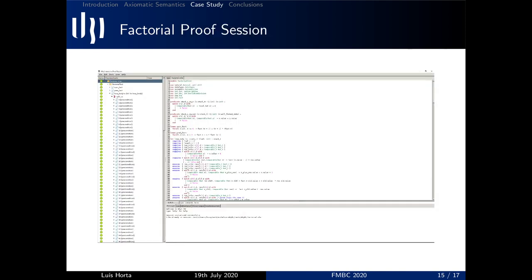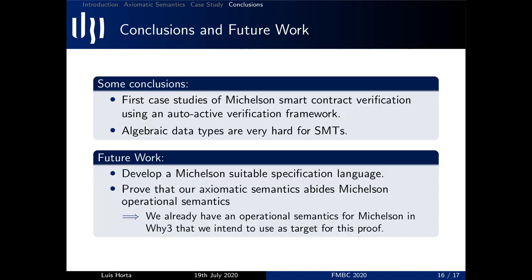This proof session generated over 2800 verification conditions which were proved by Z3 and Alt-Ergo. Here's a picture of that proof session and let's move on to some of the main conclusions we drawn from this work.